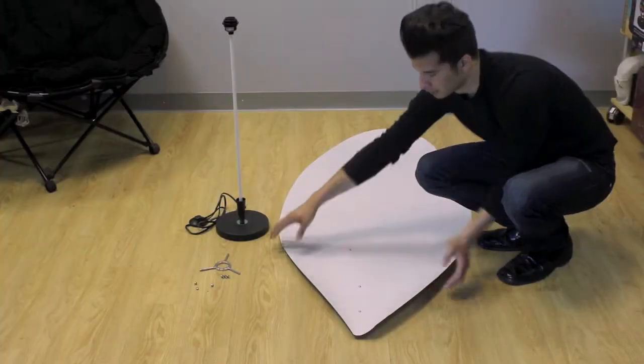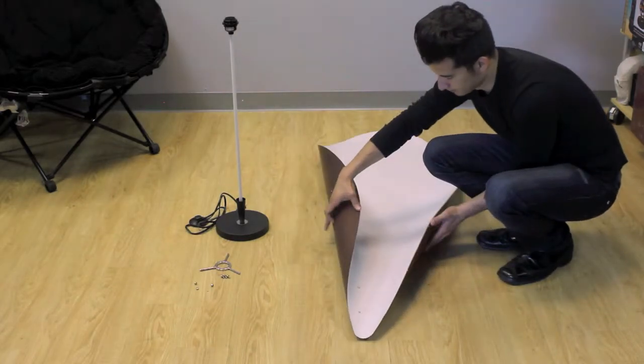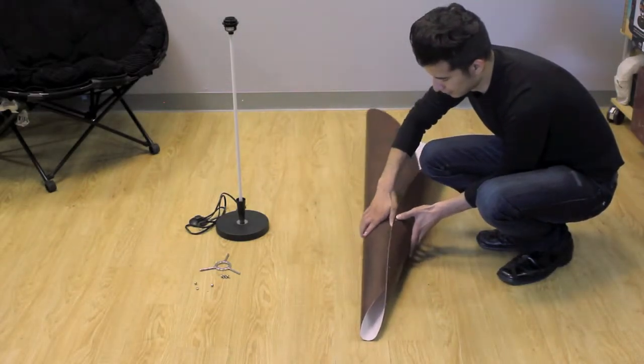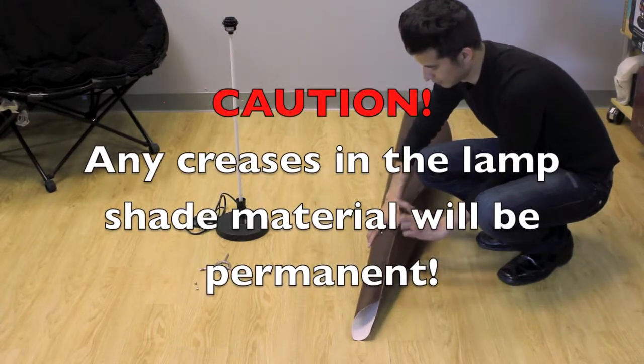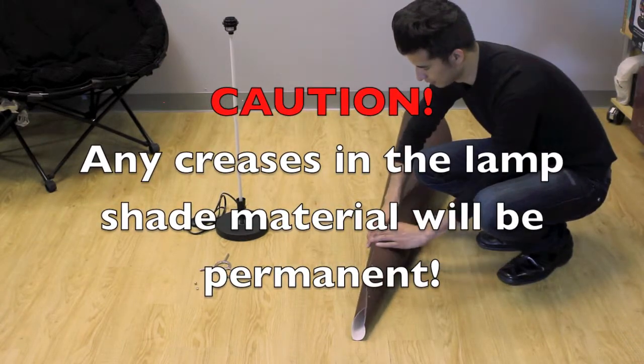Now roll the lampshade carefully as to not damage the lampshade material. Any creases in the lampshade material will be permanent.